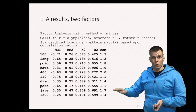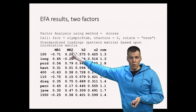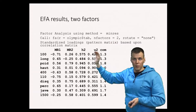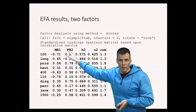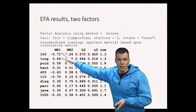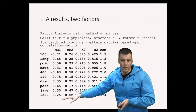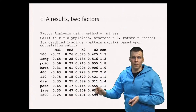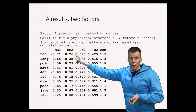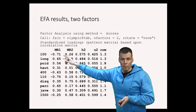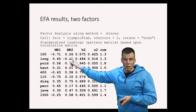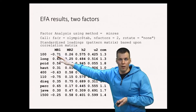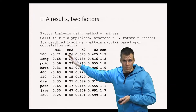We have two factors: MR1 and MR2. MR simply comes from the fact that we used the min-res estimation technique. These are called factor loadings and they are in correlation metric. So the first indicator correlates at -0.71 with the first factor and -0.22 with the second factor — it is very strongly associated with the first factor and more weakly associated with the second.